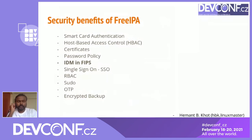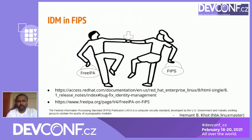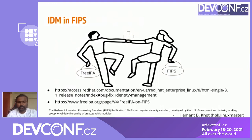IDM in FIPS is highly demanded by customers using FIPS. FreeIPA/IDM is now compatible with FIPS — Federal Information Processing Standard publication 140-2, a computer security standard. Previously, customers following this FIPS standard could not use FreeIPA, but now it is compatible and you can use IDM in your FIPS-enabled environment. Documentation links for both Red Hat IDM and FreeIPA on FIPS-enabled systems are provided.